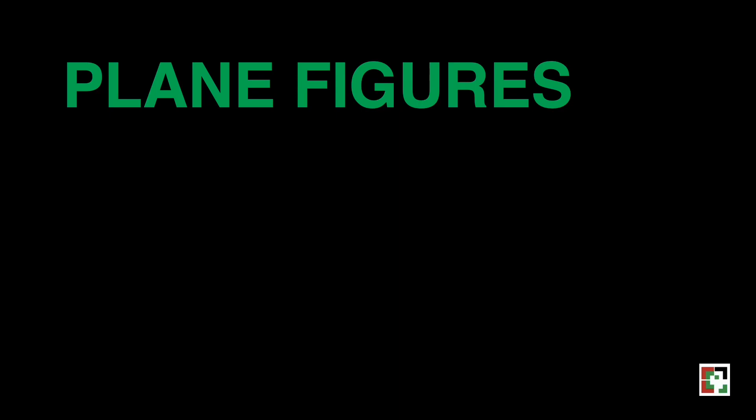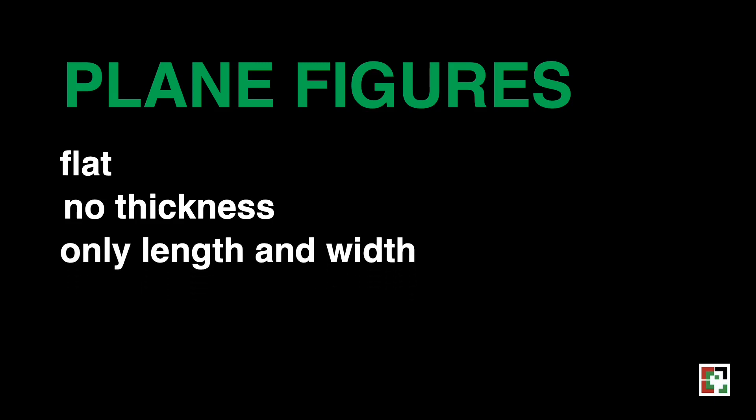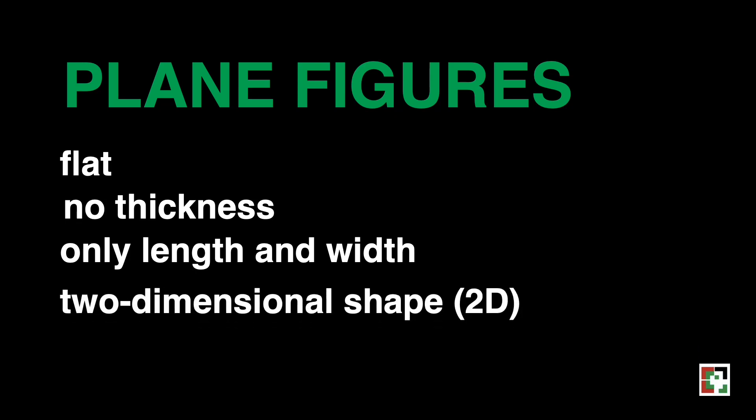Let us have the plane figures. A plane figure is a geometric figure that is flat, whose points lie on the same surface. It has no thickness, only length and width. That is why it is called two-dimensional shape or 2D.